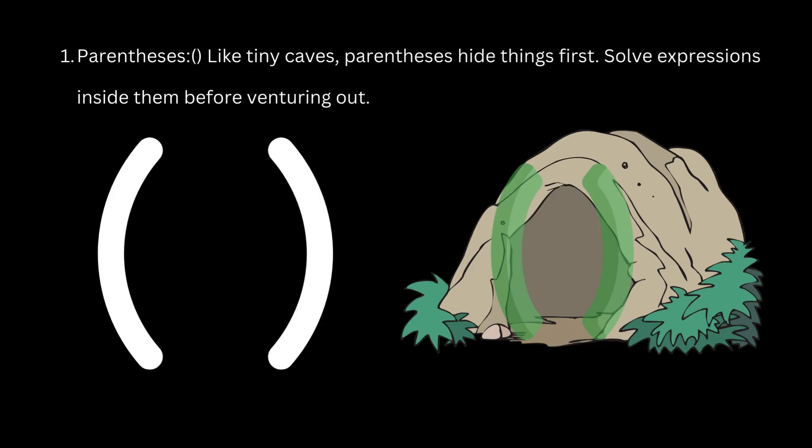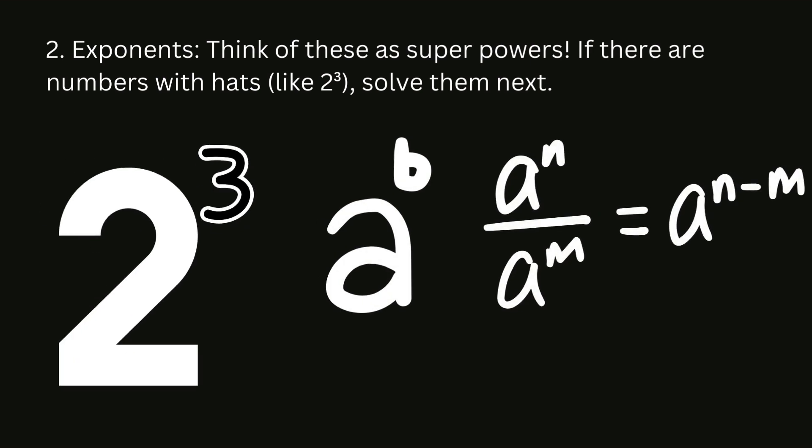1. Parentheses. Like tiny caves, parentheses hide things first. Solve expressions inside them before venturing out. 2. Exponents. Think of these as superpowers. If there are numbers with hats, like 2 to the power of 3, solve them next.